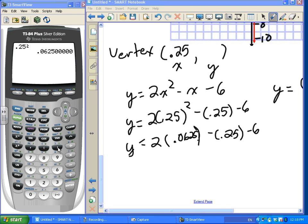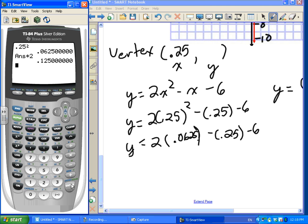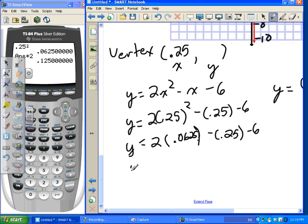0.0625 is the actual number. I know it looks a little awkward on the calculator, but we got it. That number times 2, so multiplied by 2, equals 0.125. So we have y equals 0.125 minus 0.25. And let's keep these in brackets just so we can have them separate. And minus 6.